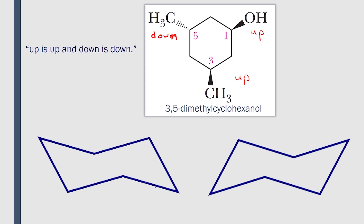Let's number the two chair conformations. In the first chair, here is carbon number 1, then 2, 3, 4, and 5 — so we have positions 1, 3, and 5. In the second chair, here is carbon number 1, then carbon 2, carbon 3, 4, and 5.